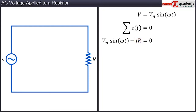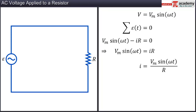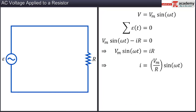Solving this equation, we get the expression for current as i = (Vm / R) sin(ωt). Since the magnitude of resistance R is a constant, the equation is simplified to i = Im sin(ωt), where Im is the amplitude of the current denoted by the fraction Vm / R.